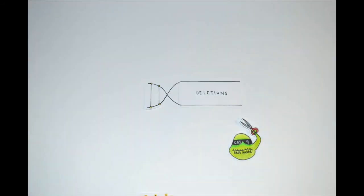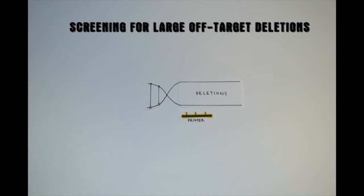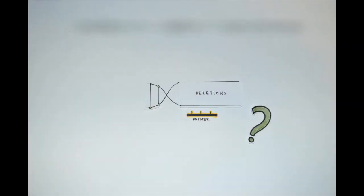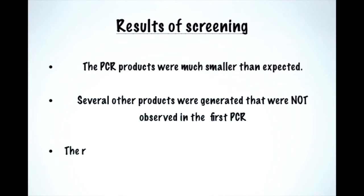Next, they screened specifically for large deletions, performing PCR amplification using primers located further upstream and downstream of the gene of interest. Not only were the PCR products again much smaller than expected, but several products were generated that were not observed in the first PCR.